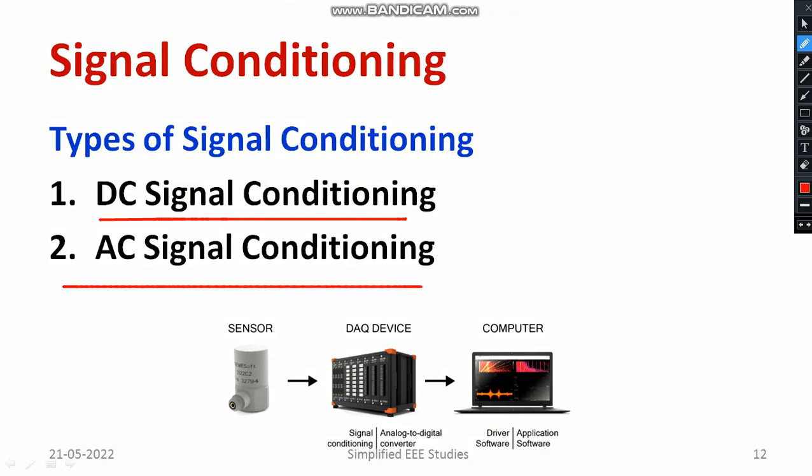First, I will show you where the signal conditioning device is positioned in a measurement system. In an electronic instrumentation system, there should be a sensor or transducer. If you directly get information from the sensor, that may not be in a proper form. You need to provide suitable strength for the signal — you need to amplify. Such processes are generally called the signal conditioning process.